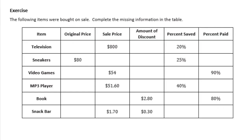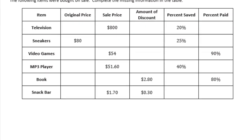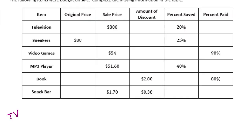Starting with the TV: the sale price is $800 and 20% was saved. That means we paid 80%, because those two percentages total 100%. We need to find the original price — we know the sale price is $800 but not the original.